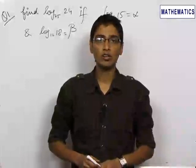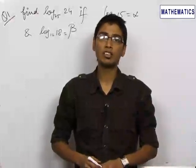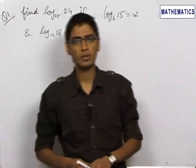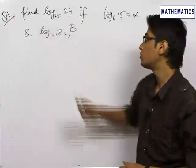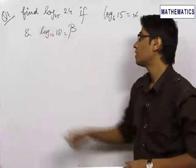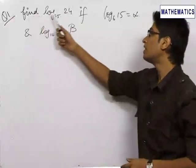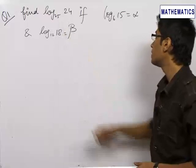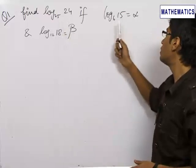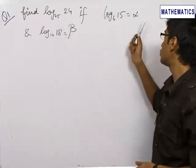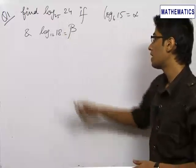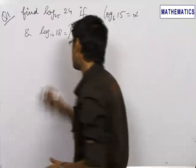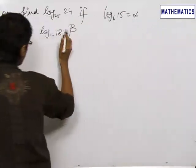The next chapter is logarithm and logarithmic properties, which is quite an easy chapter. The first question we have is: find the value of log 24 to the base 25, given that log 15 to the base 6 is alpha and log 18 to the base 12 is beta.